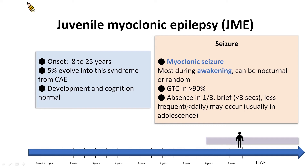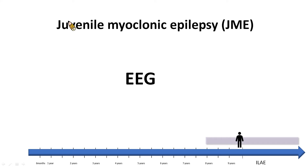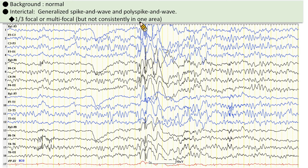Myoclonic seizures are often seen especially on awakening, but can also be nocturnal or random. Generalized tonic-clonic seizures are very common. In some patients, families do not take the myoclonic seizures seriously, and it is only when the patient develops generalized tonic-clonic seizures that they are brought to medical attention. Absence seizures are seen in one-third of cases, which may be brief and less frequent.